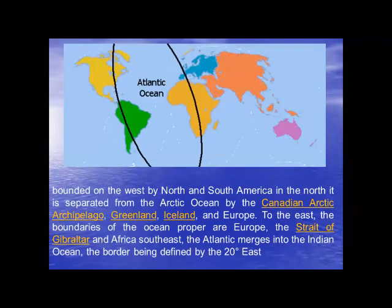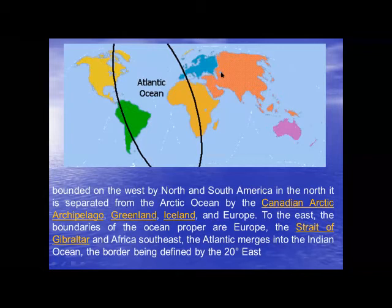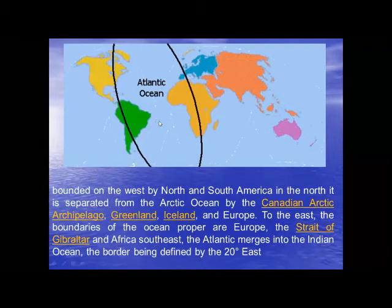Old world means the continents which were discovered earlier and were earlier known — like Africa, Europe, Asia, and Australia. This is the old world. America was discovered later, so it is called the new world. So the Atlantic Ocean separates this old world and this new world.